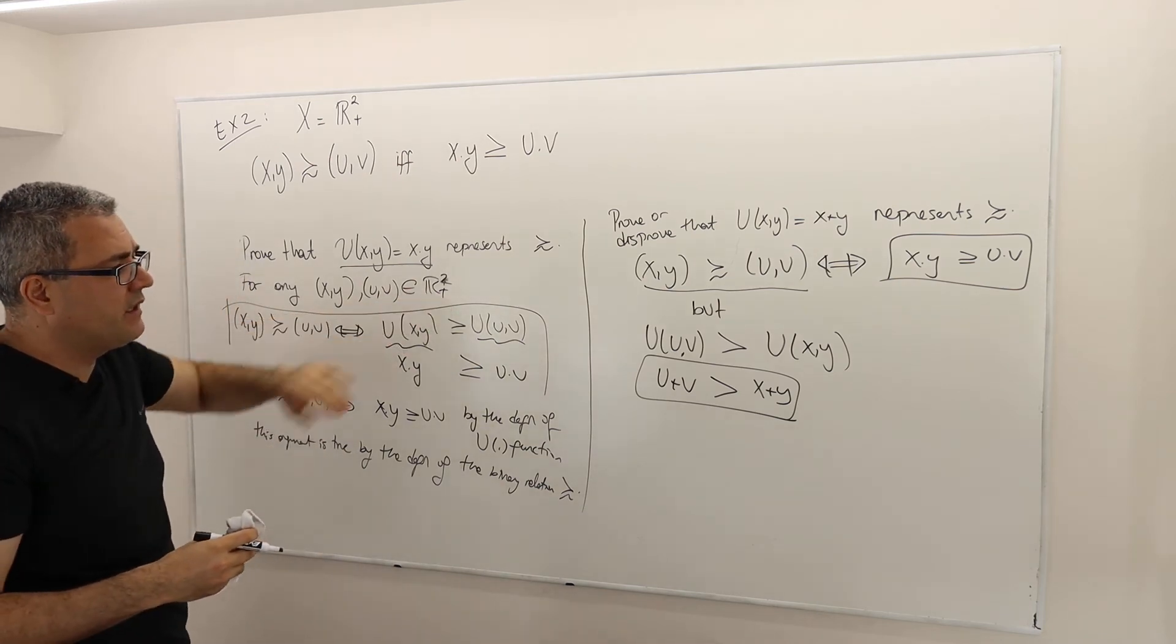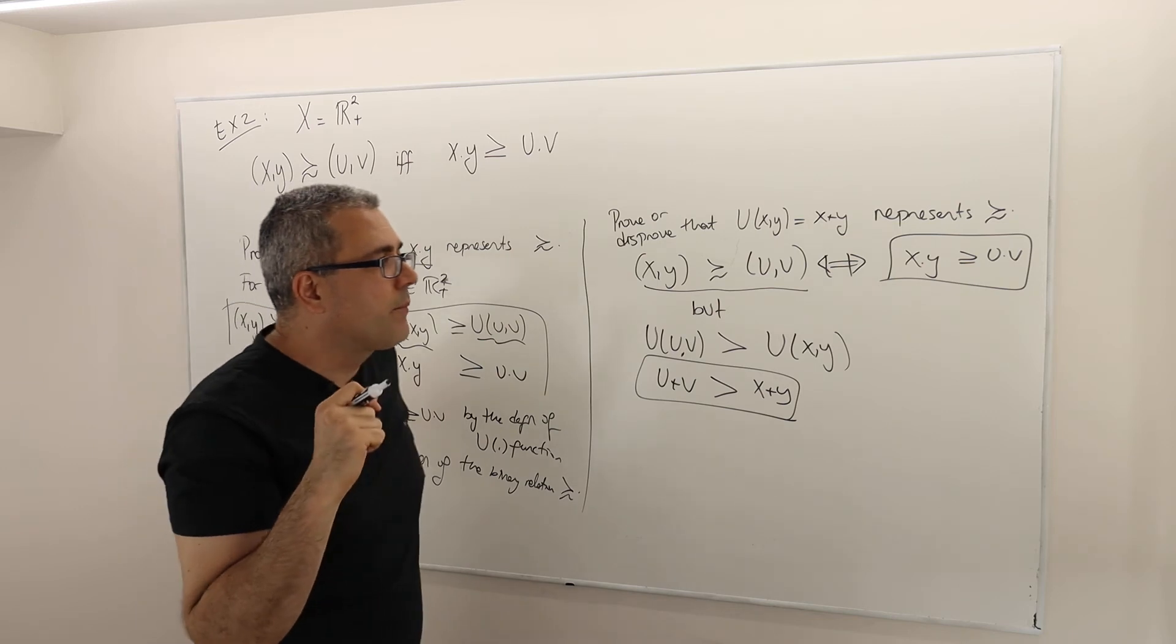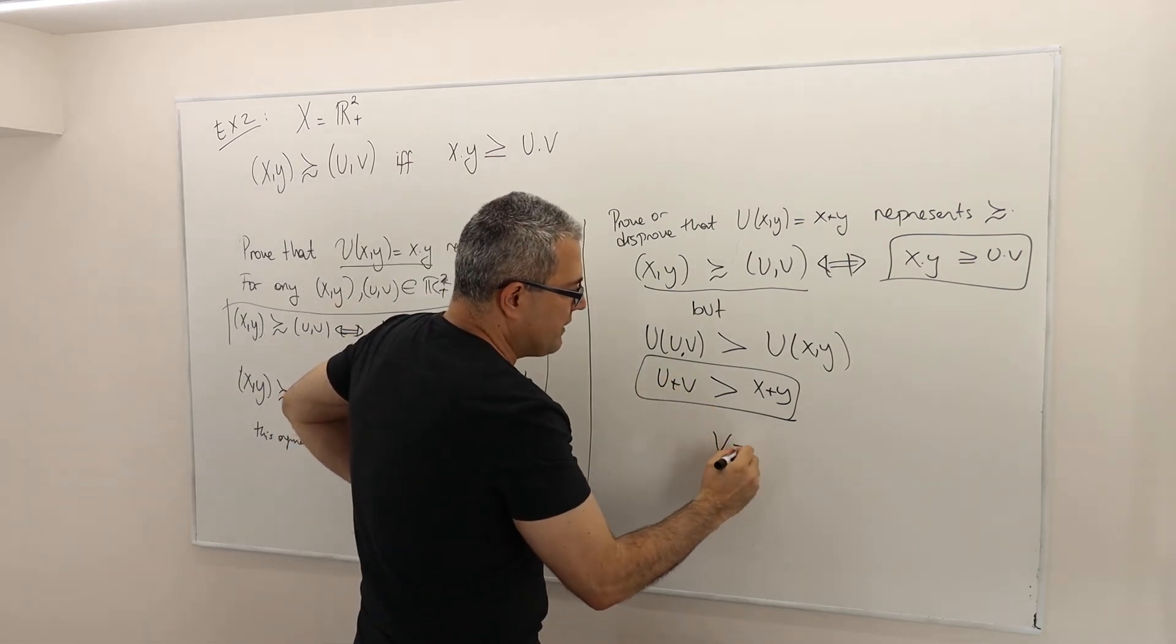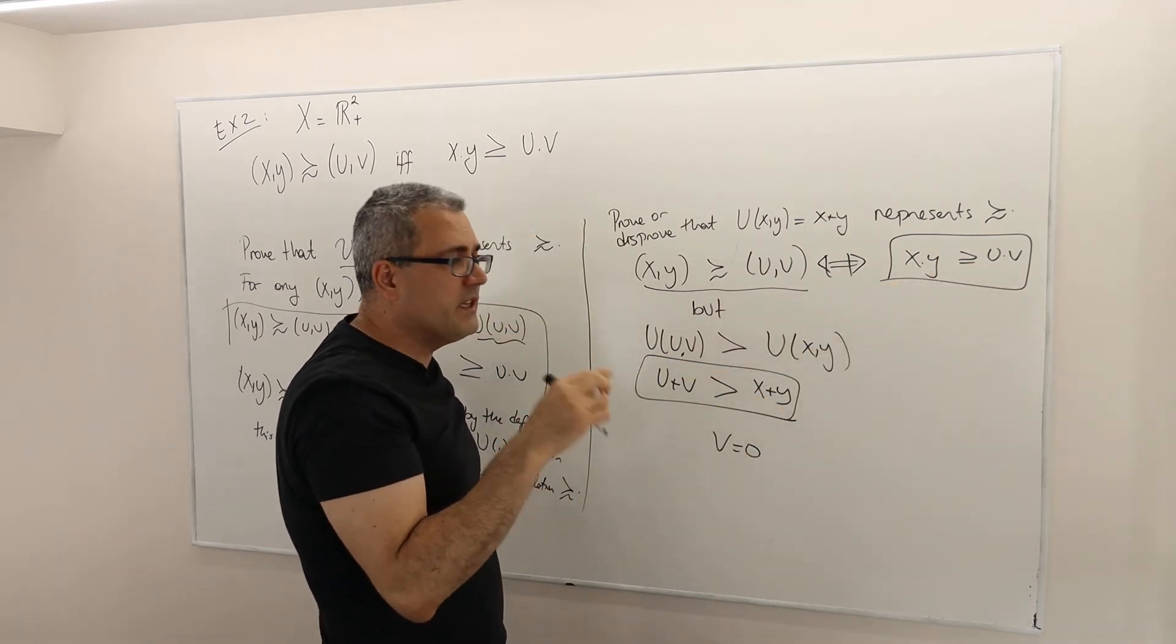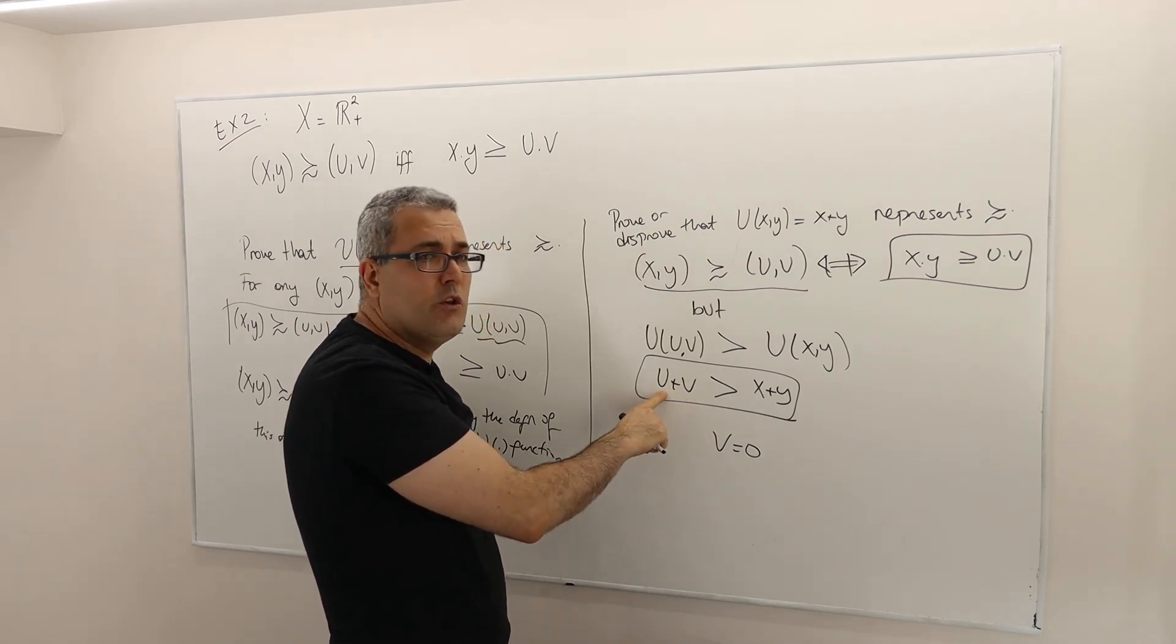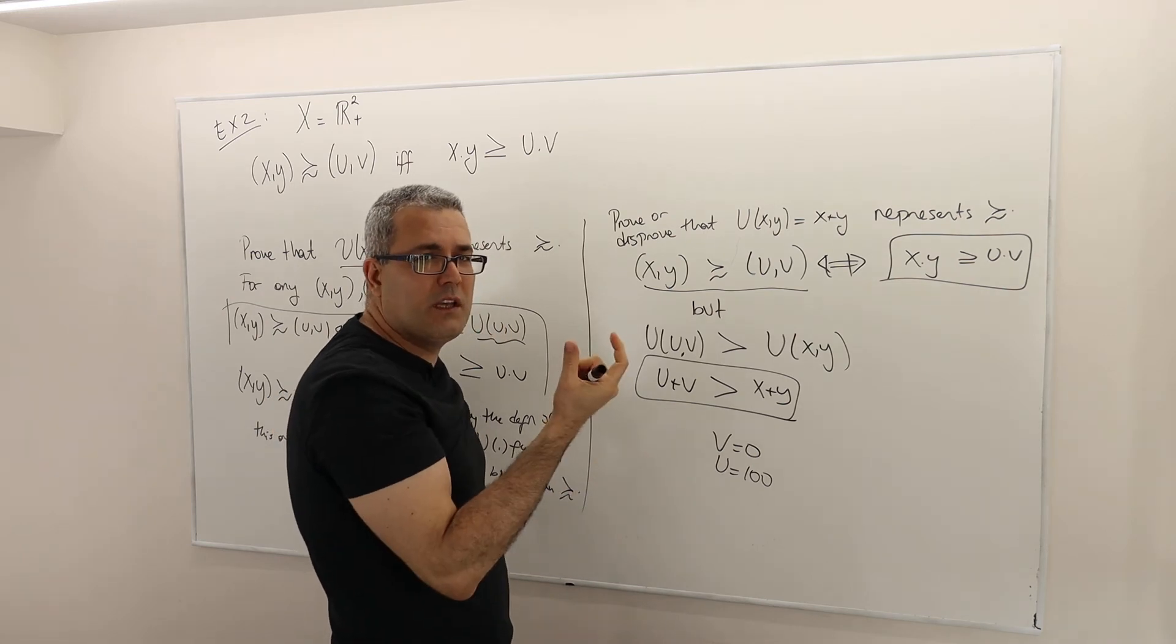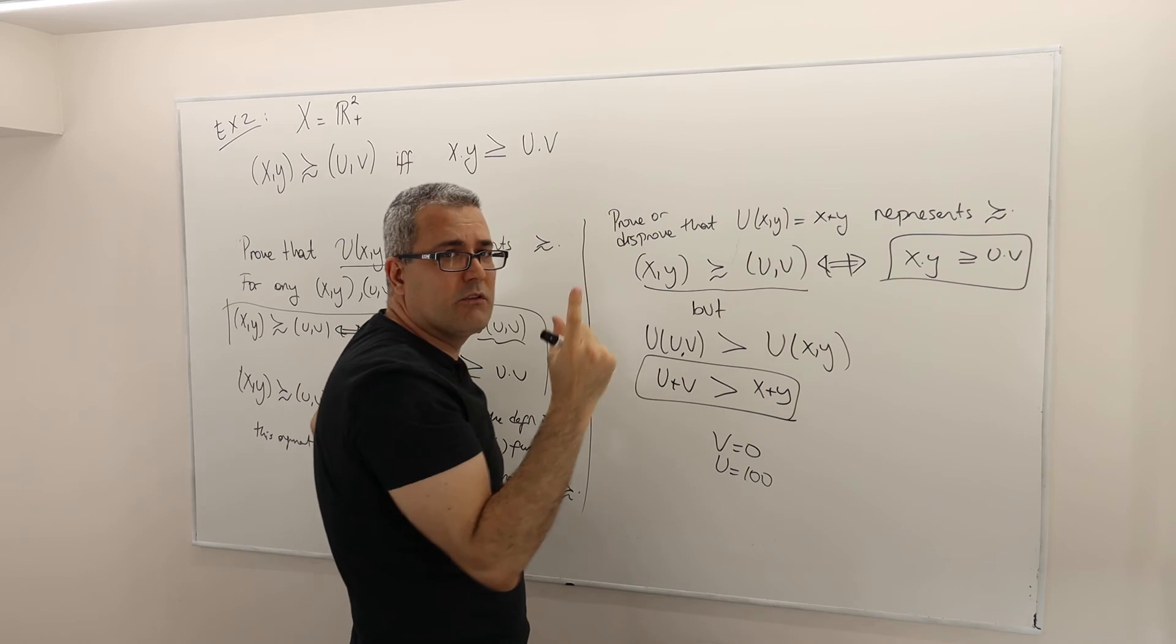I'm in positive numbers. Think about it. Zero is always a tricky number. Let's say V is 0. When I multiply by U, U times V is going to be 0, very small. However, when I add it with 0, let's make U very big, 100. So U plus V is going to be huge, 100, but its multiplication is 0, tiny.